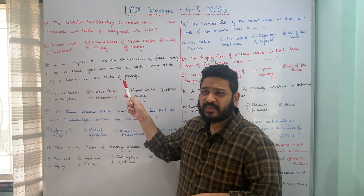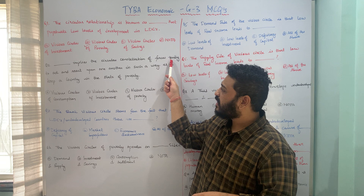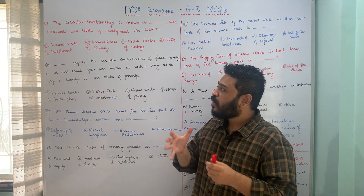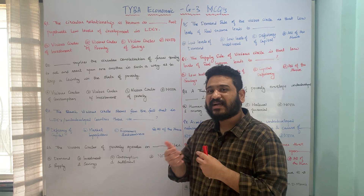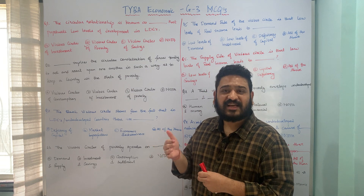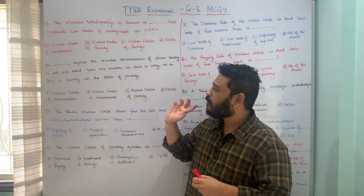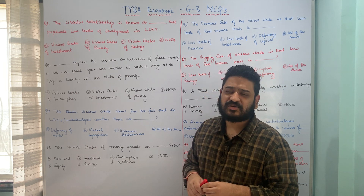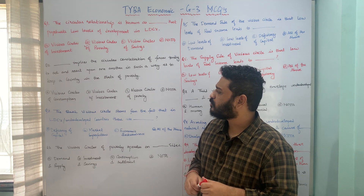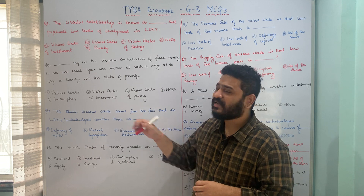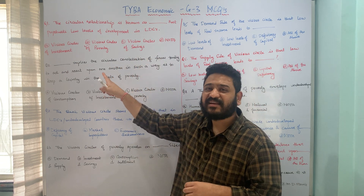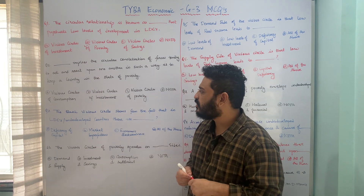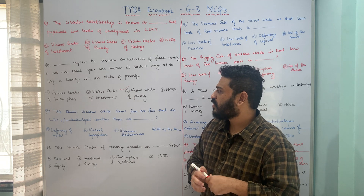The next question: dash implies the circular constellation of forces tending to act and react upon one another in such a fashion that it tries to keep a country in the state of poverty. Options: A — vicious circle of consumption; B — vicious circles of investment; C — vicious circles of poverty; D — none of the above. The correct answer is option C, vicious circles of poverty.